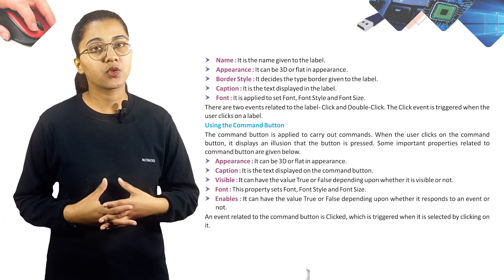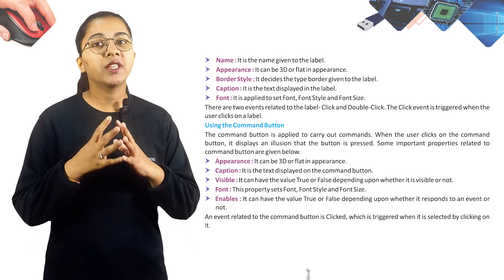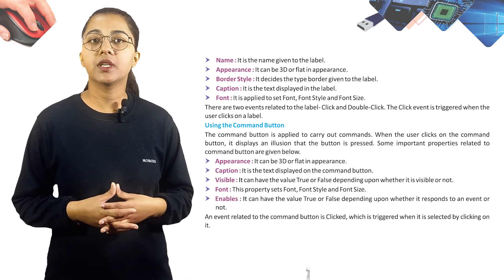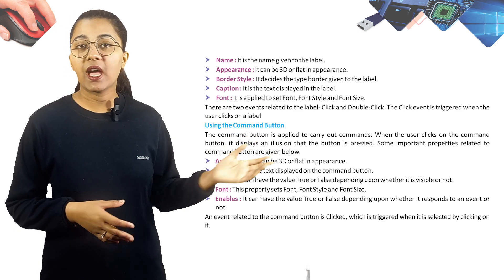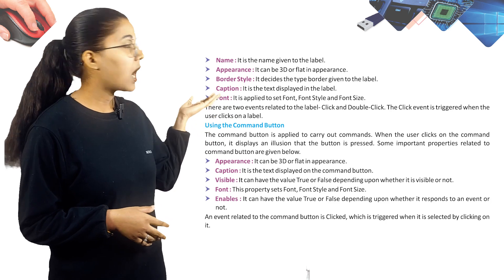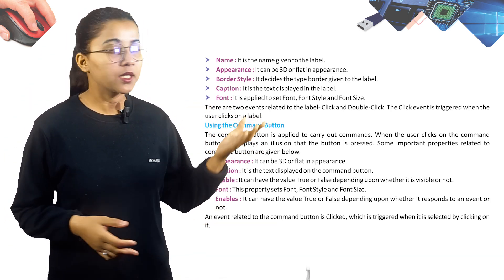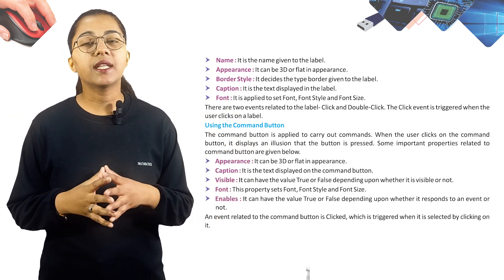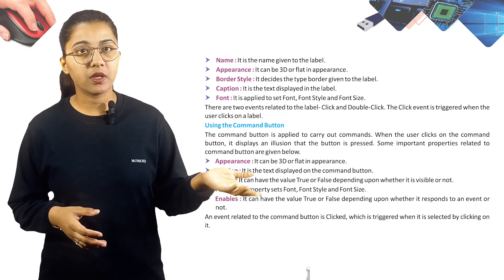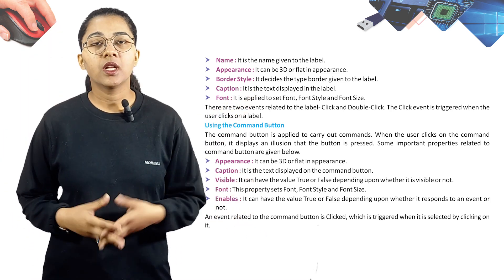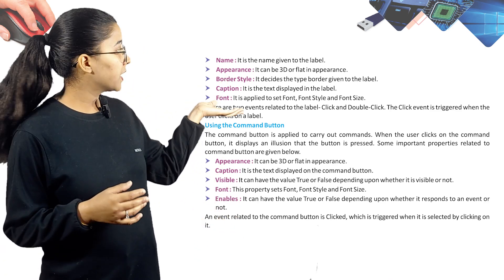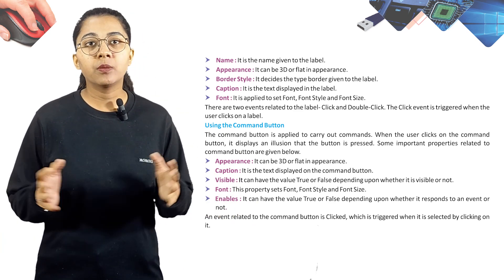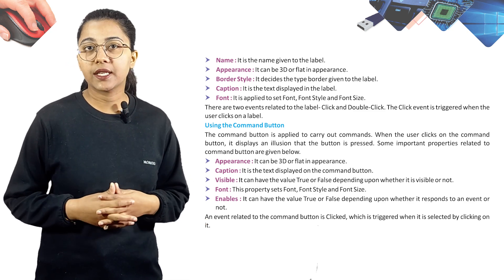The Command Button is used to carry out commands. When the user clicks on the command button, it displays an illusion that the button is being pressed. Important properties include: Appearance — 3D or flat; Caption — the text displayed on the button; Visible — True or False; Font — sets font, font style, and font size; Enabled — True or False depending on whether it responds to an event. The Click event is triggered when the button is clicked.